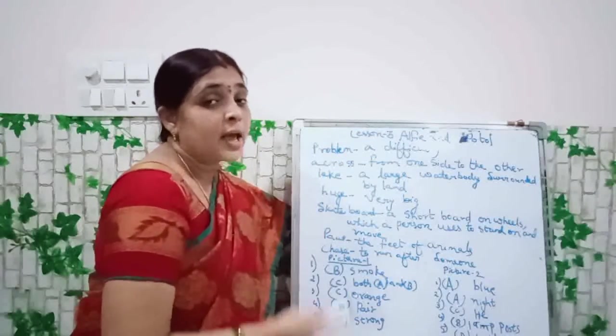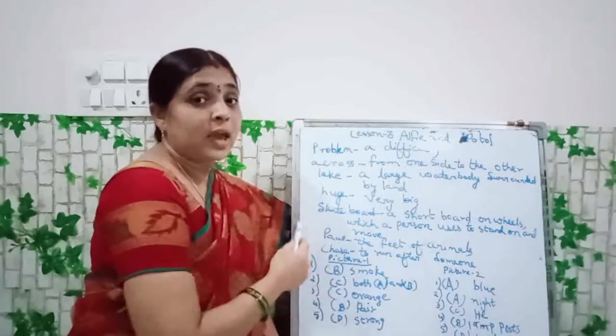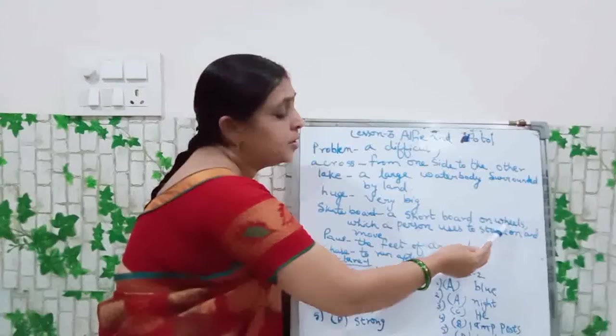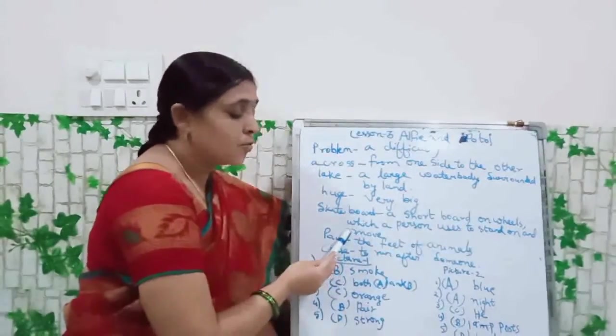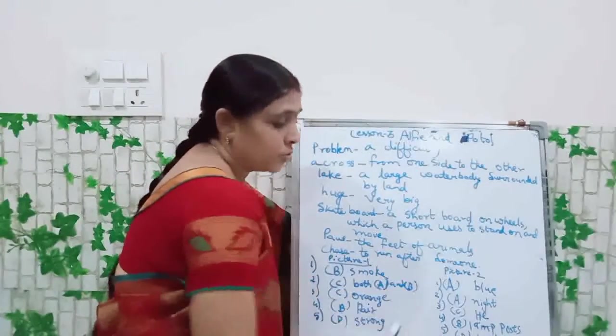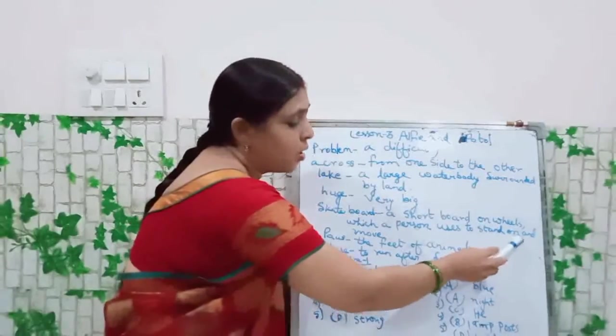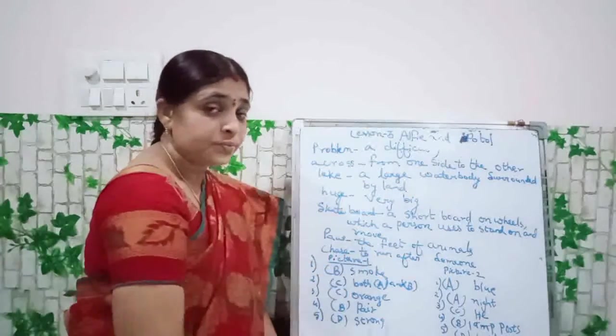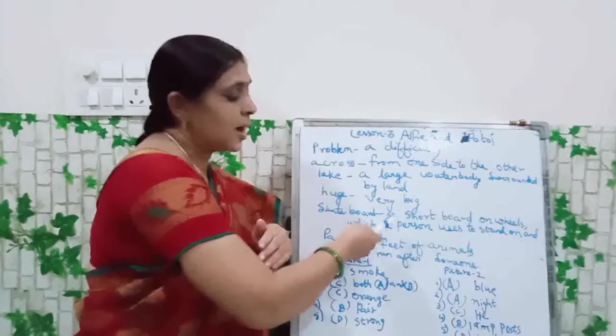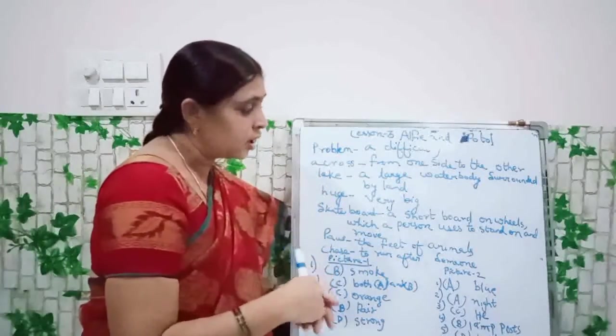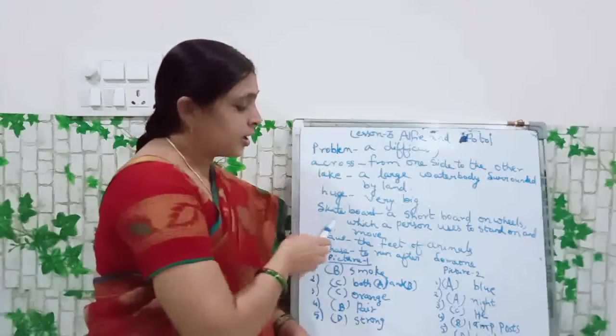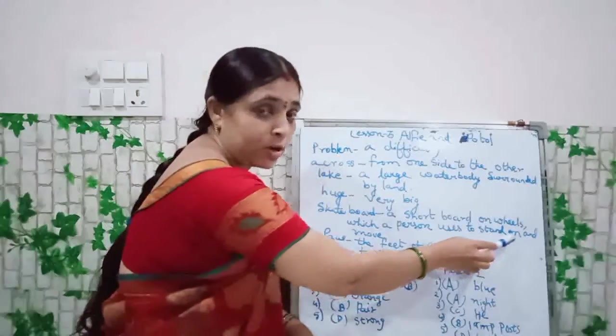Skateboard. What is the spelling of skateboard? S-K-A-T-E. Skate. B-O-A-R-D. Board. Skateboard means a short, S-H-O-R-T, short, B-O-A-R-D, board. A short board, O-N, on, W-H-E-E-L-S, wheels. A short board on wheels. Which a person, W-H-I-C-H, which, P-E-R-S-O-N, person, U-S-E-S, uses, T-O, to, S-T-A-N-D, stand. Stand. O-N, on, A-N-D, and, M-O-V-E, move. Skateboard means a short board on wheels which a person uses to stand on and move. Person can stand on it. Stand on and move. They can move because of the wheels. The board can move.